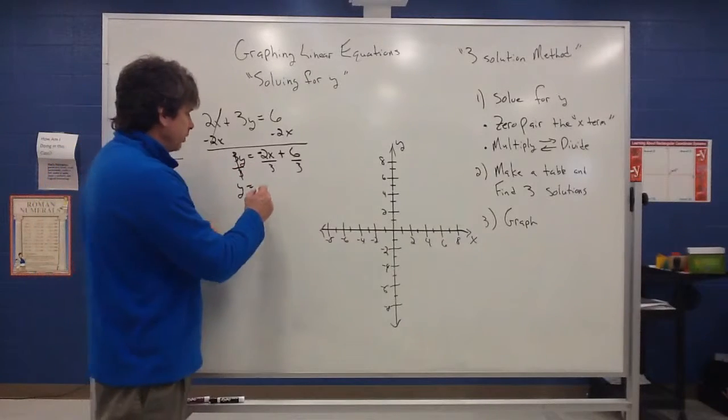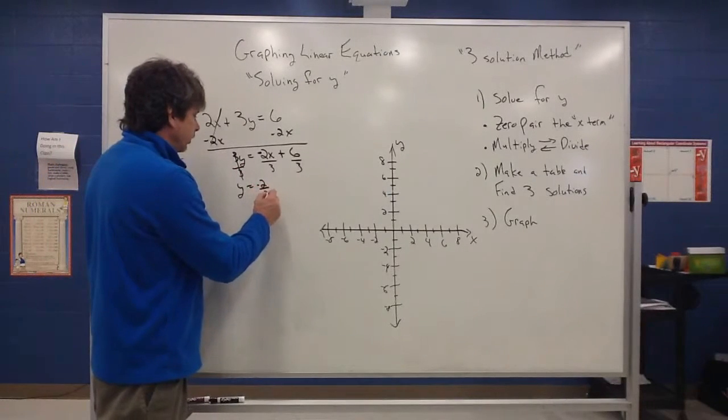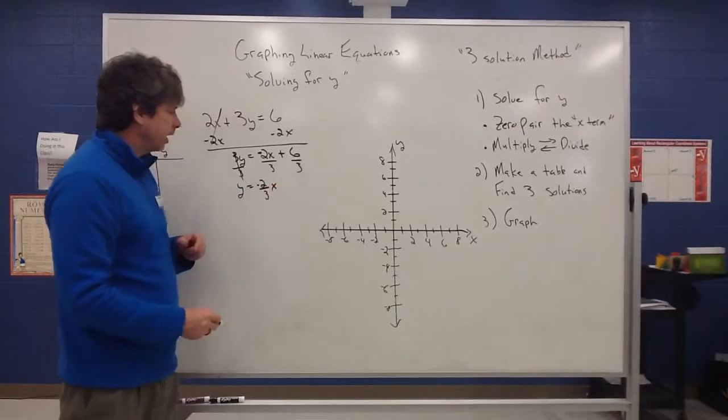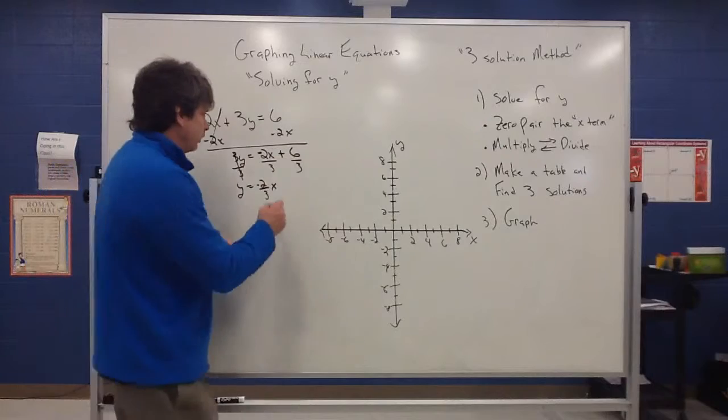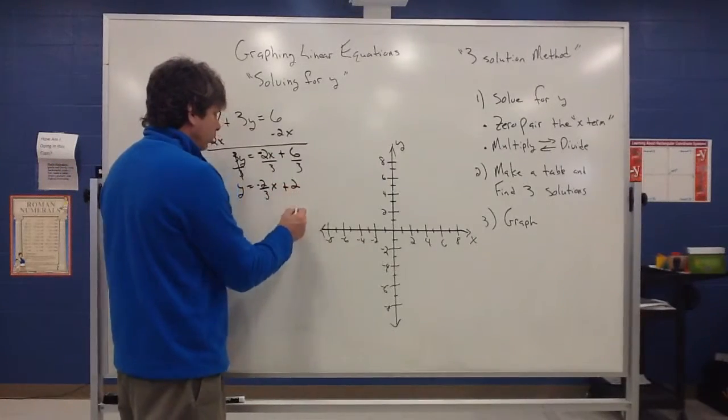That fraction of negative 2 thirds does not simplify. So we just leave that as negative 2 thirds on the outside. We put that x out to the side like that. We just kind of slide it out. And then we do know that the 3 does go into 6 twice. So I can simplify that down to a whole number.